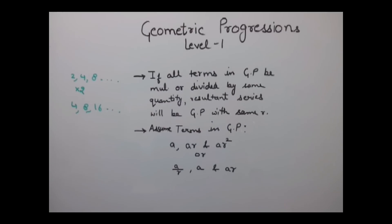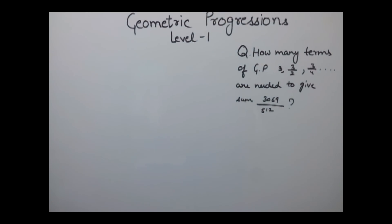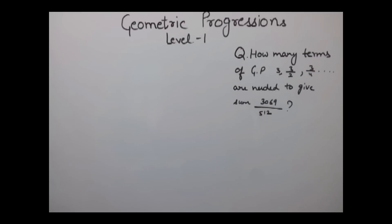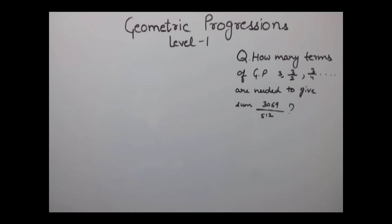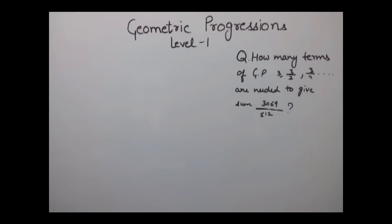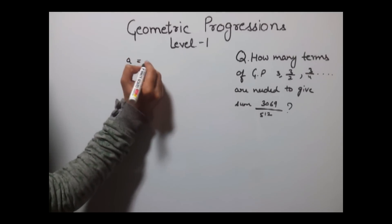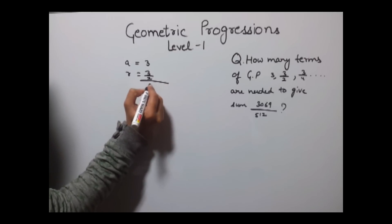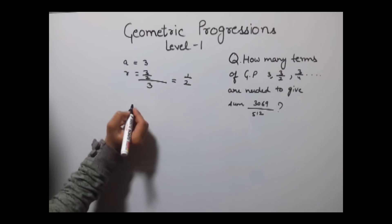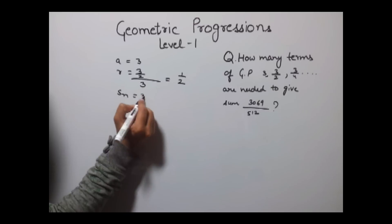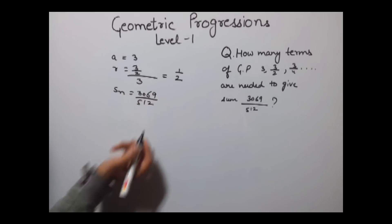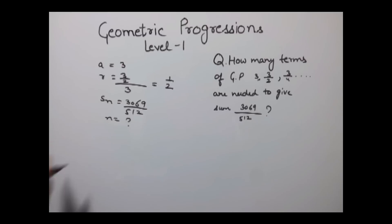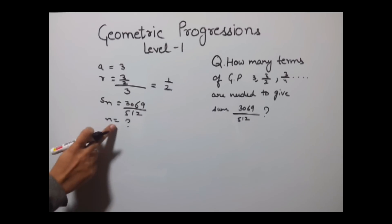The first example asks: how many terms of the GP 3, 3/2, 3/4, ... are needed to give a sum of 3069/512? Here, the first term A equals 3, and the common ratio R equals (3/2)/3 = 1/2. The sum of n terms is given as 3069/512, and we need to find n.